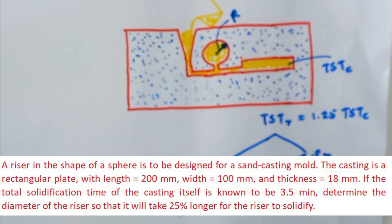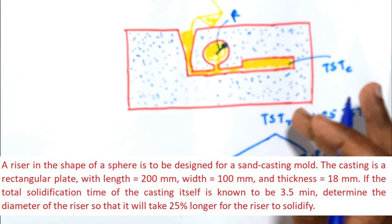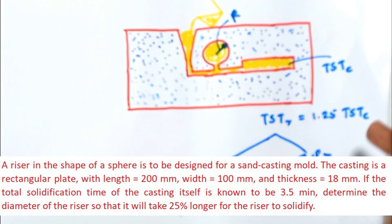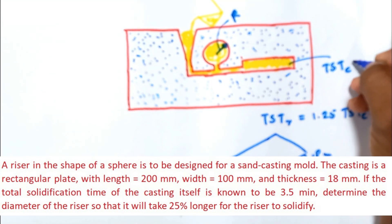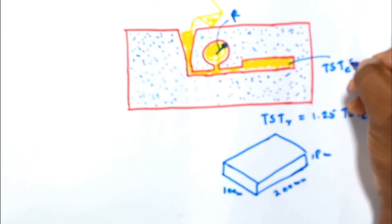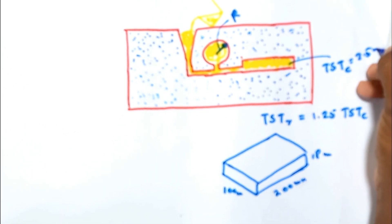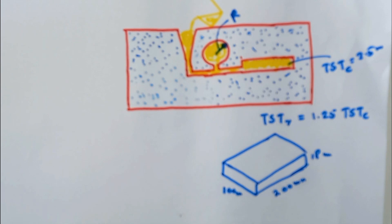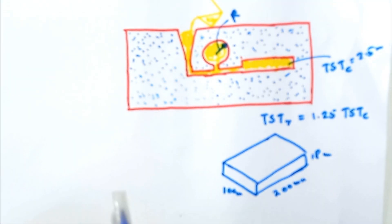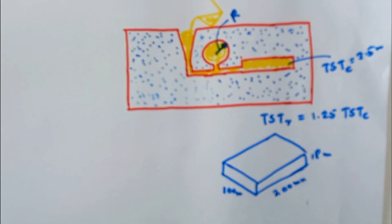The problem also gives us the total solidification time of the casting as 3.5 minutes. The reason this data is given is to find the mold constant. So first of all, let's find the mold constant.